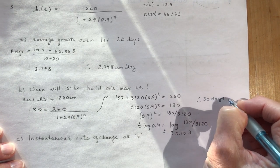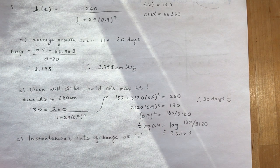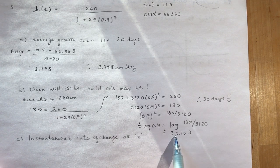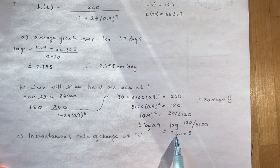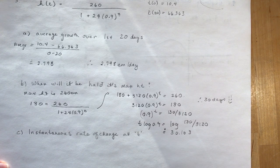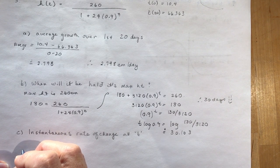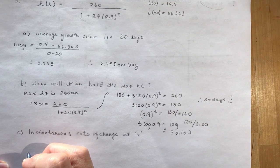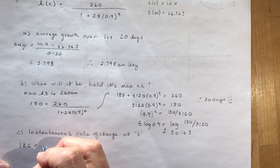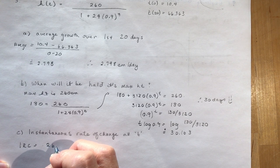The last question says, what is the instantaneous rate of change at your answer to b? So I want to know what is the instantaneous rate of change at 30 days. Recall an instantaneous rate of change—I have an equation, so I can use a really small interval. So I'm going to evaluate h at 30 and h at 30.1. So instantaneous rate of change is going to be h at 30.1.